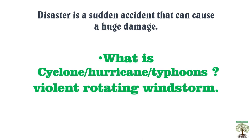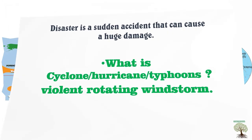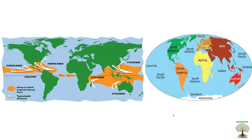Cyclone, hurricane, and typhoon are all the same. Let's look at their locations. Hurricanes are tropical storms that form over the North Atlantic Ocean and the Northeastern Pacific. So according to that location, the name given is 'hurricane.'